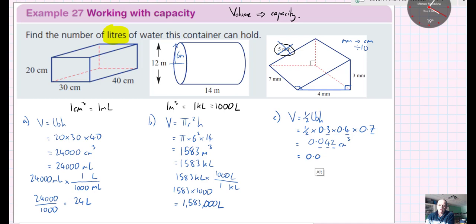So that's really quite a tiny object. And then that's going to change to 0.042 milliliters. And then to change the milliliters into liters, I'm going to do the same thing as I did over here. I'm going to divide by 1,000.